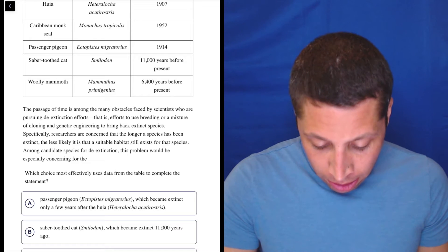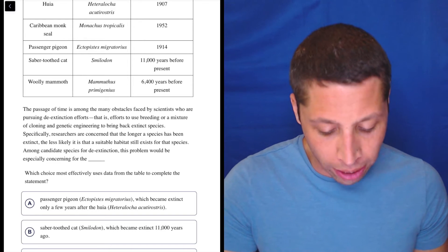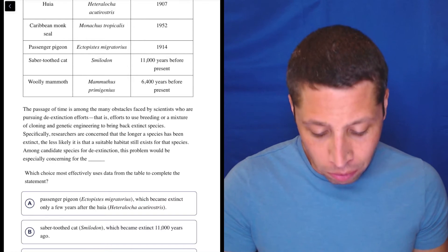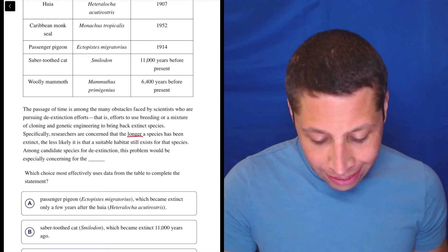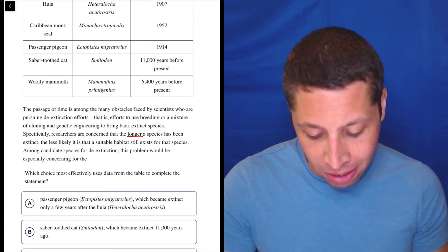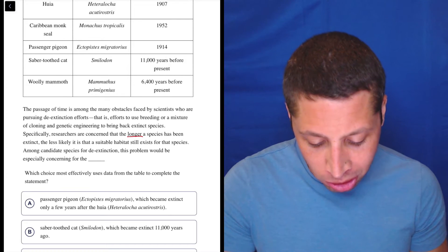So let's see what they want from us. We need to complete the statement. The passage of time is among the many obstacles faced by scientists who are pursuing de-extinction efforts - that is, efforts to use breeding or a mixture of cloning and genetic engineering to bring back extinct species. Specifically, researchers are concerned the longer a species has been extinct, the less likely it is that a suitable habitat still exists for that species. Among candidate species for de-extinction, this problem would be especially concerning for...